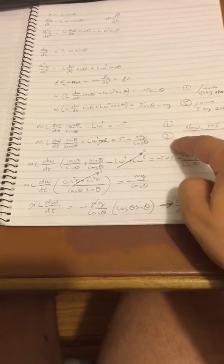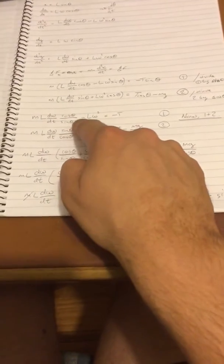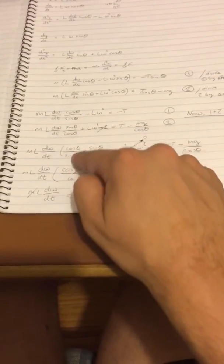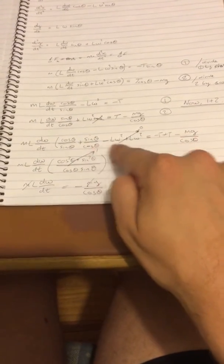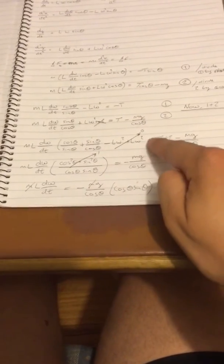And that means that when we add 1 and 2, a lot of our terms are going to die. So we're going to get these pesky terms, which we'll treat next, in front of m L d omega dt: cosine theta over sine theta plus sine theta over cosine theta. But if you look, minus L omega squared plus L omega squared cancel.